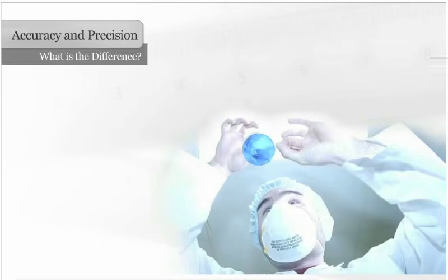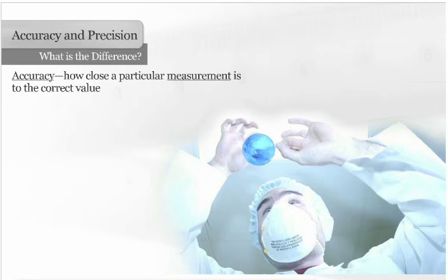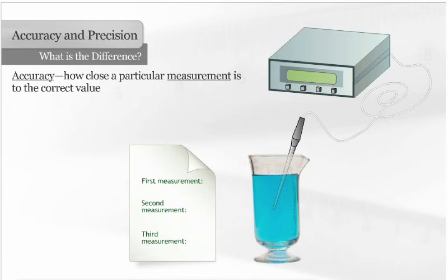A good scientific measurement is made with accuracy and precision. Accuracy tells us how close a particular measurement is to the correct value. For instance, how close is the reading of a thermometer to the actual temperature?